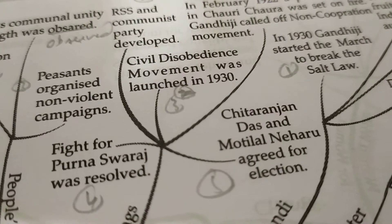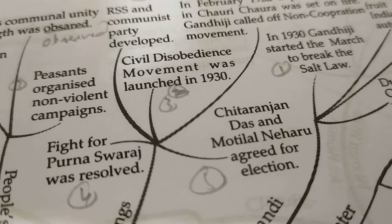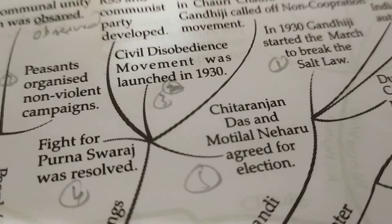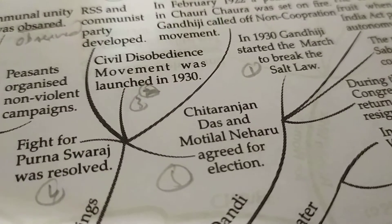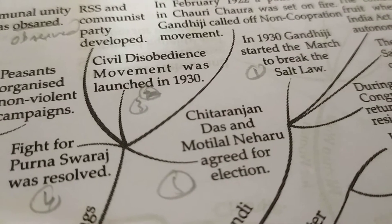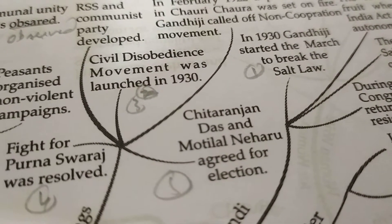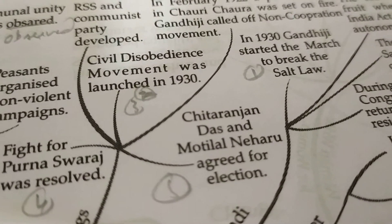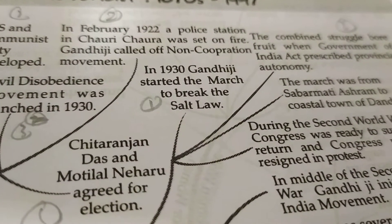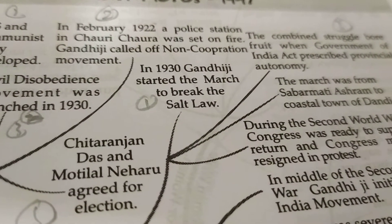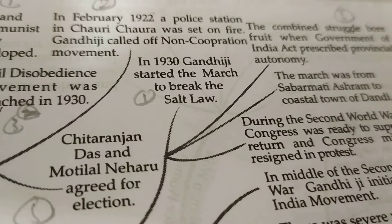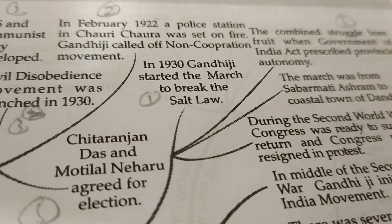Then, the Civil Disobedience Movement launched in 1930. In 1930, Gandhi started the march to break the salt law, because the government had put a tax on salt. Gandhiji and other people thought that salt is an integral part of Indian food, so why should we tax it? In protest, he started the march from Sabarmati Ashram to the coastal town of Dandi, where he made salt and distributed it among the people free of cost.